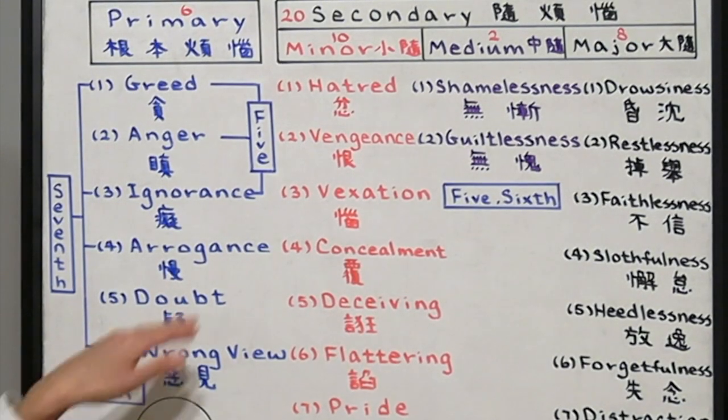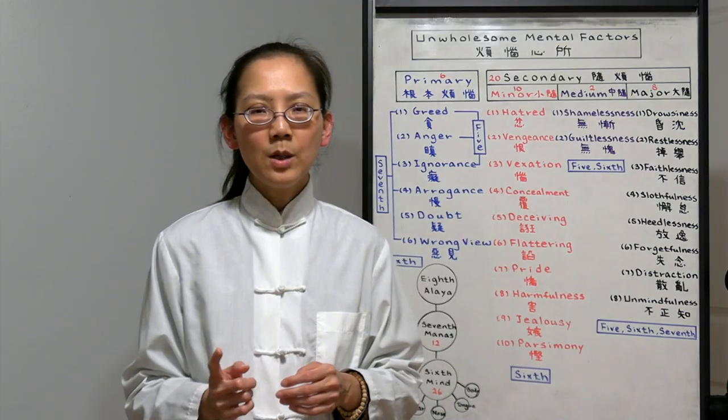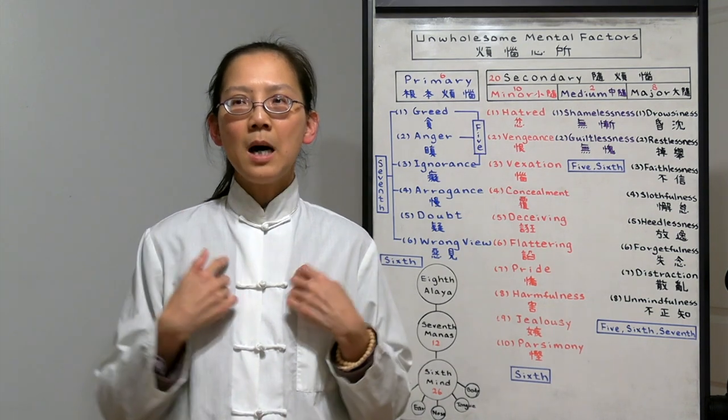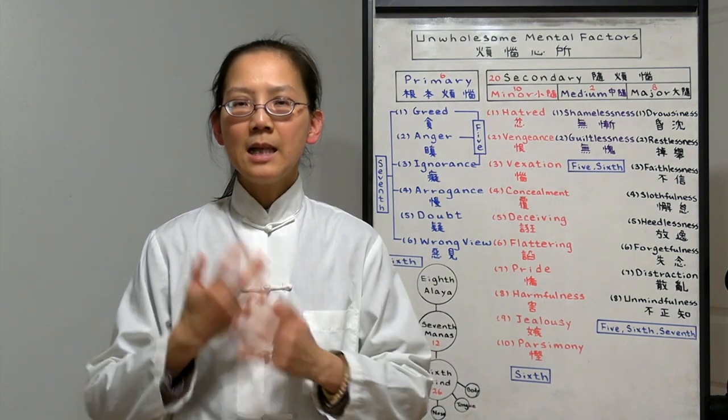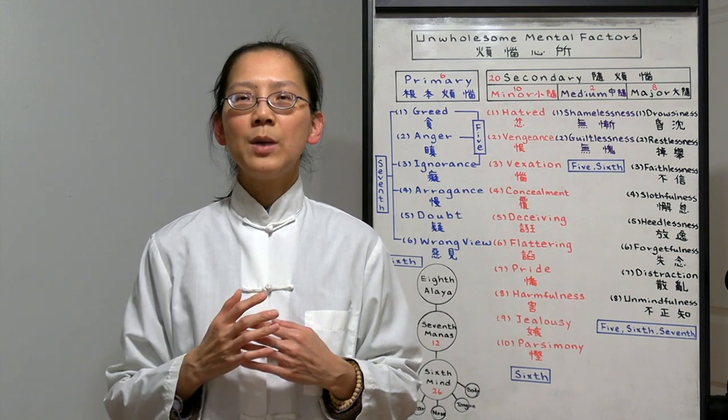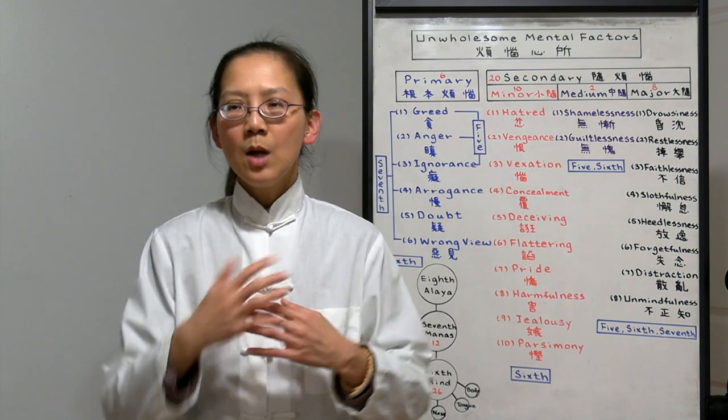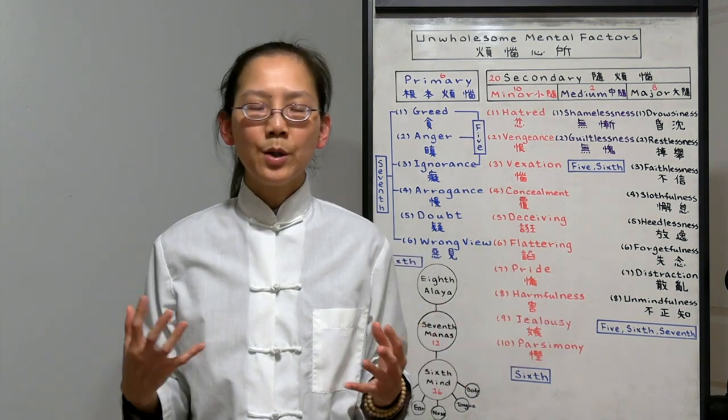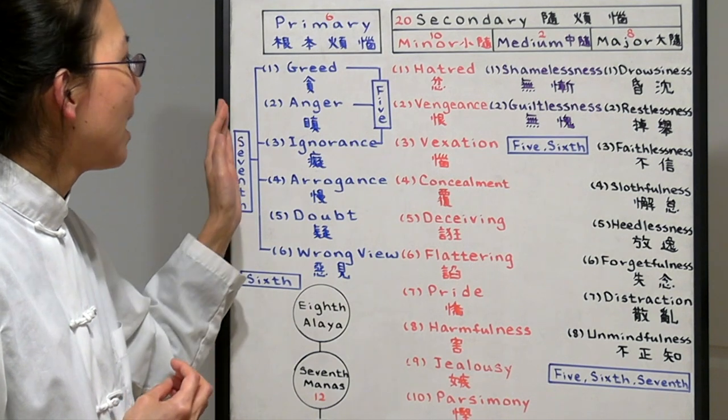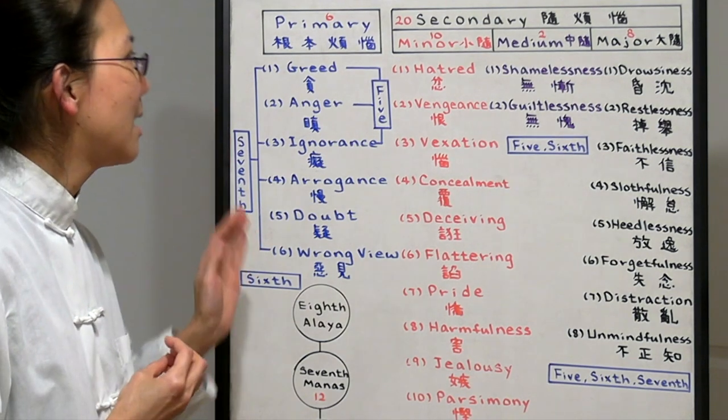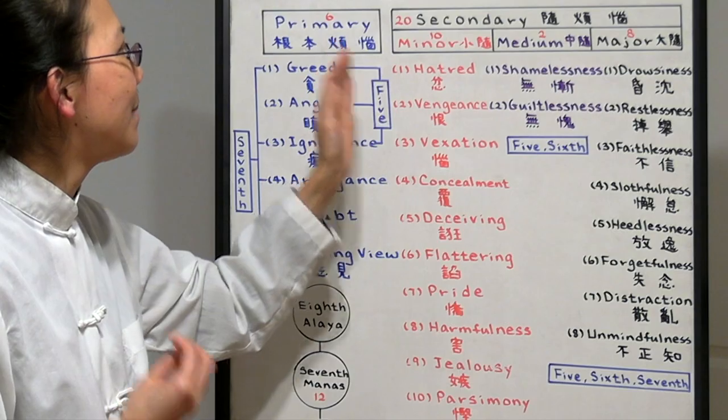Number six is our wrong views. Biggest wrong view is believing this body is the real me and separate from everyone else. That's why we have a lot of opposition with everyone else in this world. Following the primary unwholesome thoughts comes 20 unwholesome mental factors.